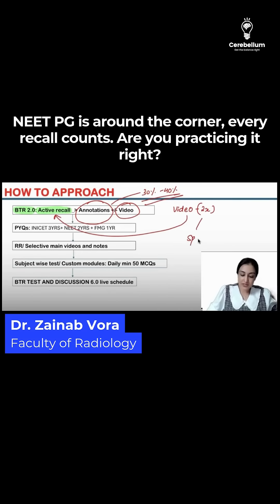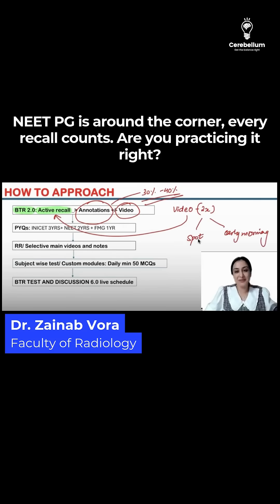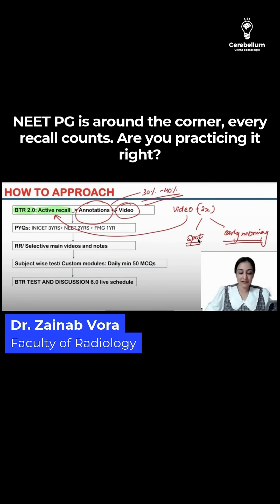Just like how we take TB samples — one is a spot sample and one is an early morning sample the next day — similarly, you will watch the BTR video twice: one is a spot watch right now, and the second is early morning the next day. Then, in the afternoon the next day, you will start doing active recall.